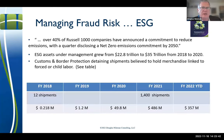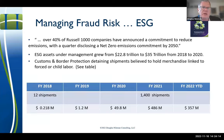Managing fraud risk in terms of ESG: the report says over 40% of Russell 1000 companies have announced commitments to reduce carbon emissions, and a quarter are disclosing net-zero emission commitments by 2050. ESG assets under management grew explosively. The Uyghur Forced Labor Protection Act has driven many seizures at the border for products suspected of being made with forced or child labor.